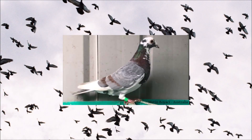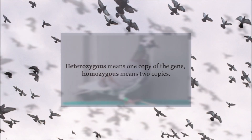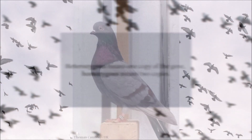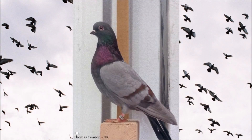But the phenotype it produces is different depending on if the pigeon is heterozygous or homozygous for Indigo. Heterozygous means one copy of the gene, and homozygous means two copies. Indigo is best expressed on a blue base colour. When a pigeon has just one copy of the Indigo gene, the blue wing shield and body feathers are slightly changed to a more grey or navy colour, and the wing pattern becomes a more reddish plum or chestnut colour.